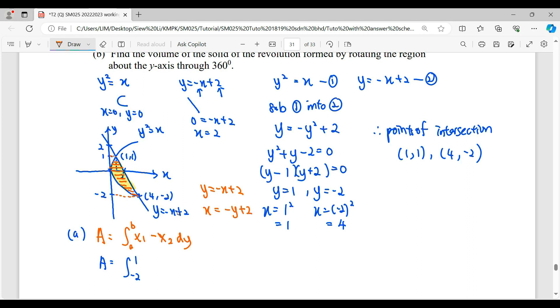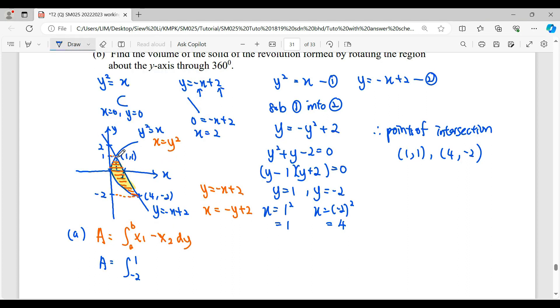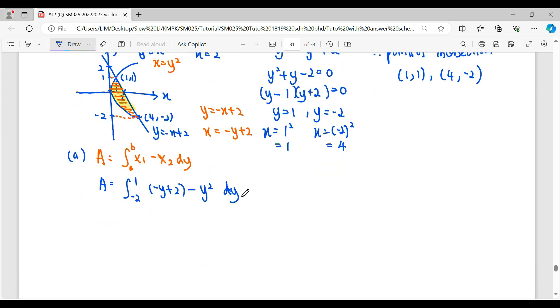Meanwhile, for this curve, we already express in term of y. So we just rewrite x as a subject. Then we continue, we substitute. So the right-hand side graph, which is -y + 2, going to minus the left-hand side graph. So the left-hand side graph here is y². And we're doing this area with respect to y-axis. So we are respecting to dy. So for this integral, we simplify. And we can start integrate.